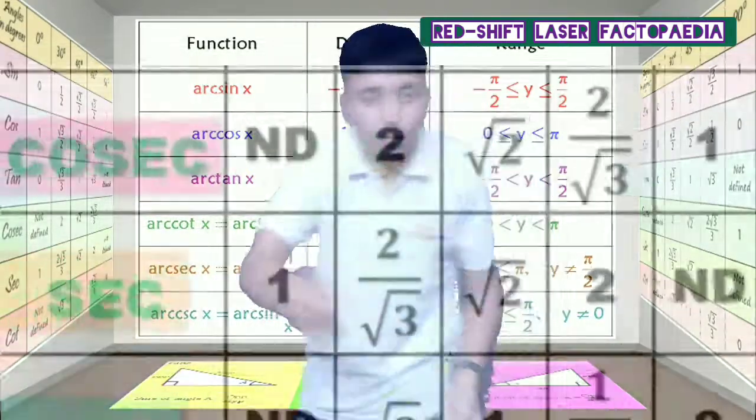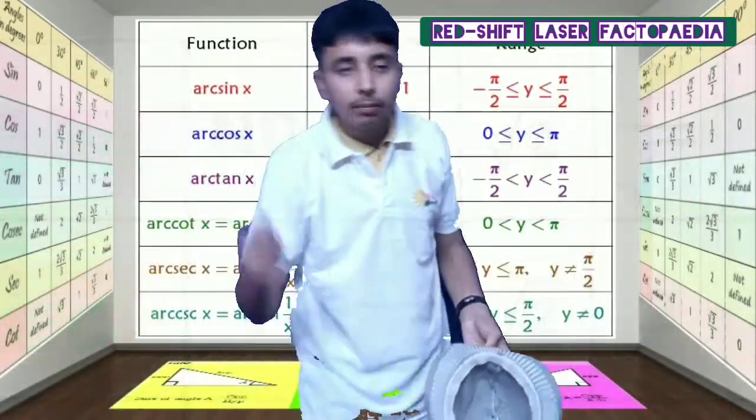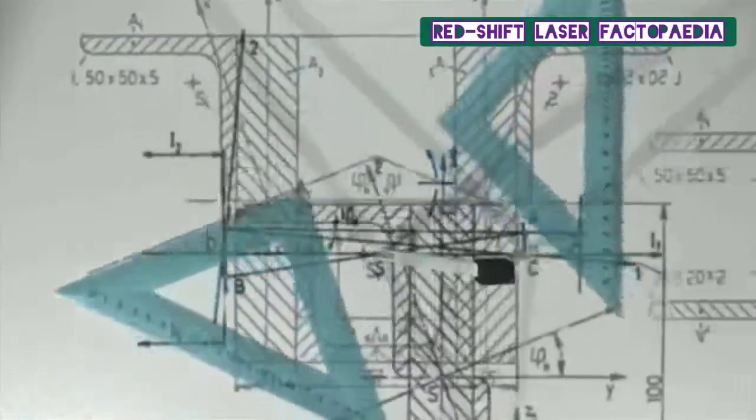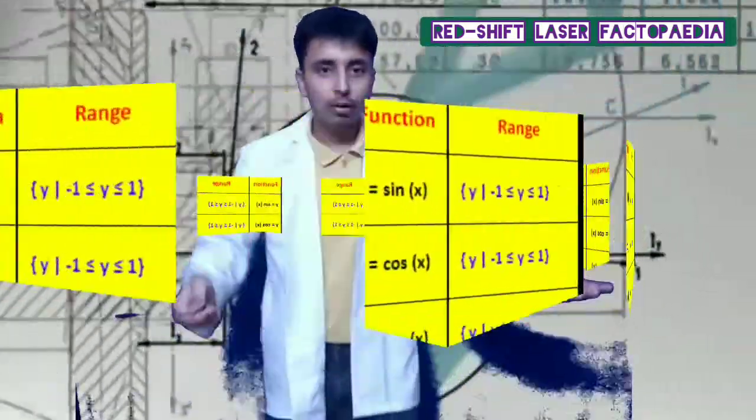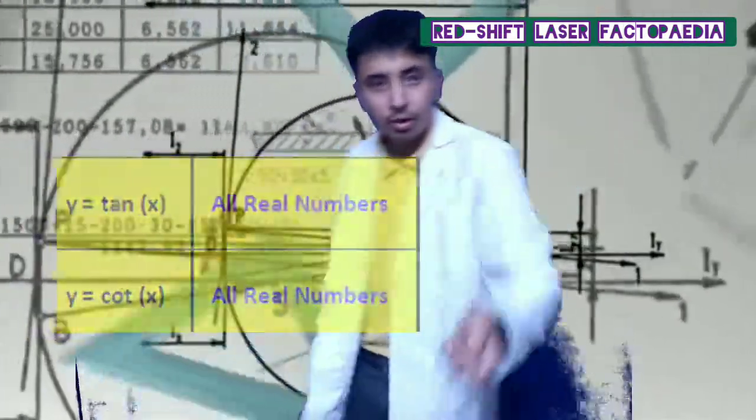Sin, sin ka reciprocal sec hai. Cos ka tan, cot ka hai. Now these values also you keep according to your calculation. Now quickly, inverse ka domain minus 1 plus 1, cos inverse ka also minus 1 plus 1, tan inverse ki domain capital R. Now tell cot inverse ki domain kya hogi.